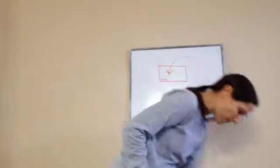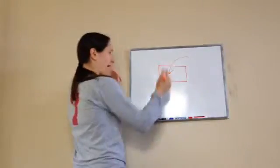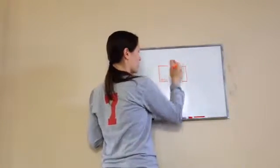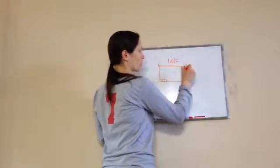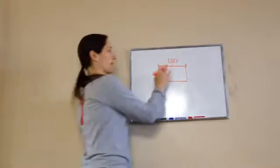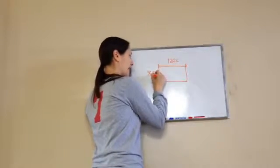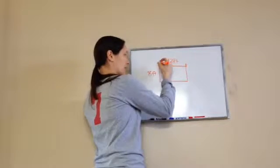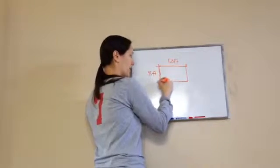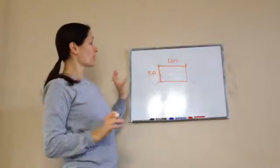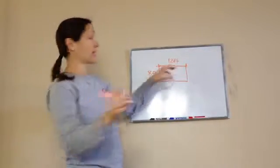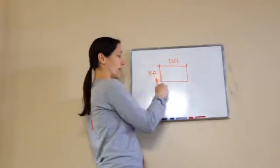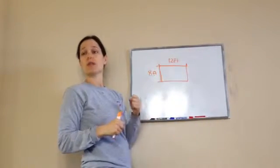So for example, if I had something that said 12 feet on top, that means from here all the way to here is 12 feet. And then this over here is 8 feet, so from here to here it's 8 feet. But they want to know what's the area on the inside. The cool thing about finding area is you can use the measurements on the outside to find out what's on the inside.